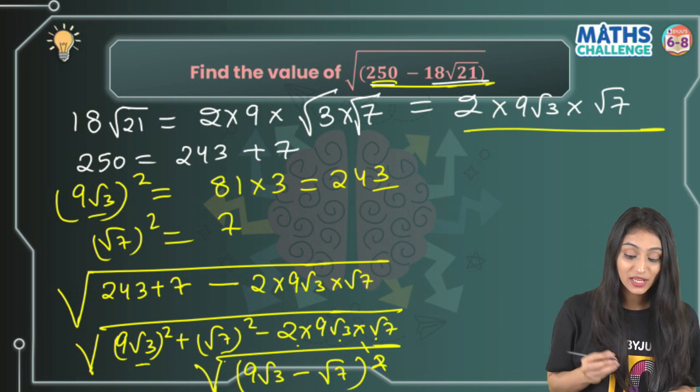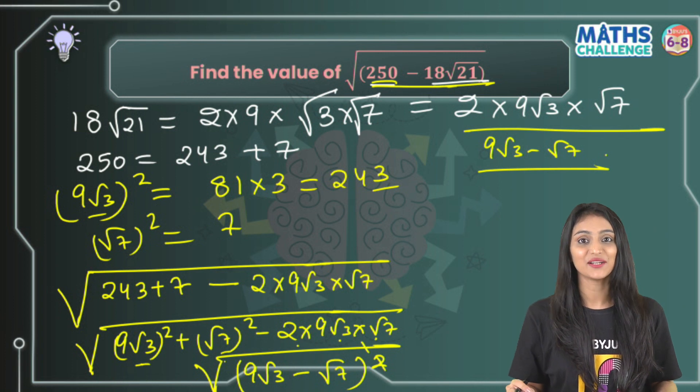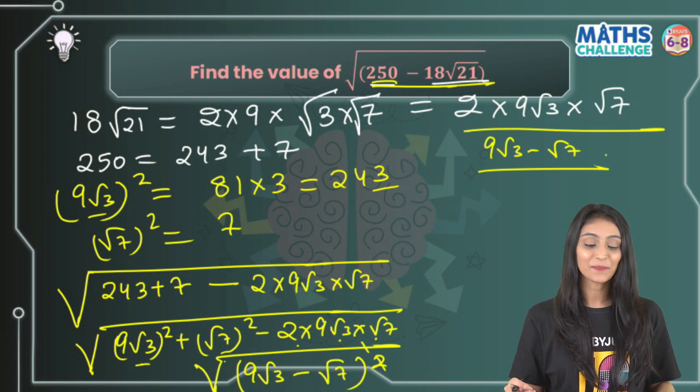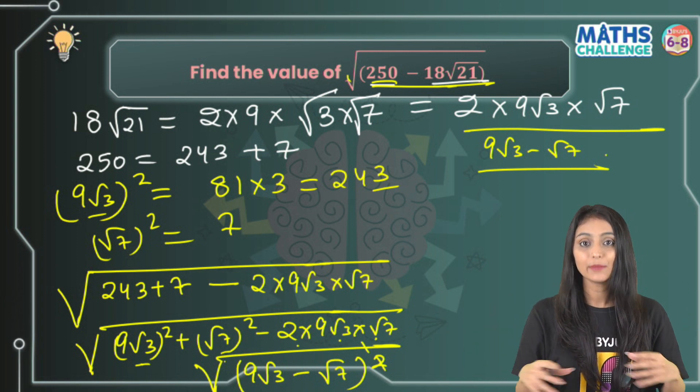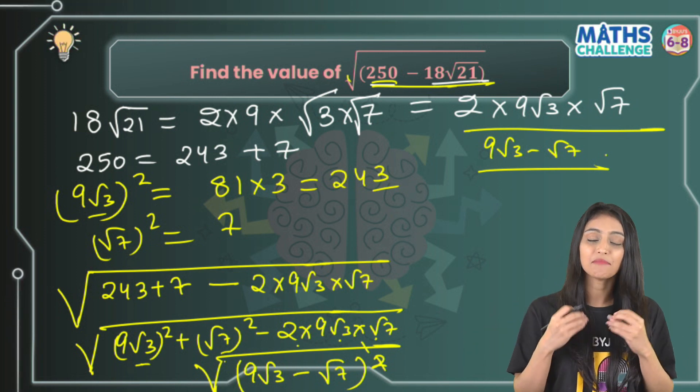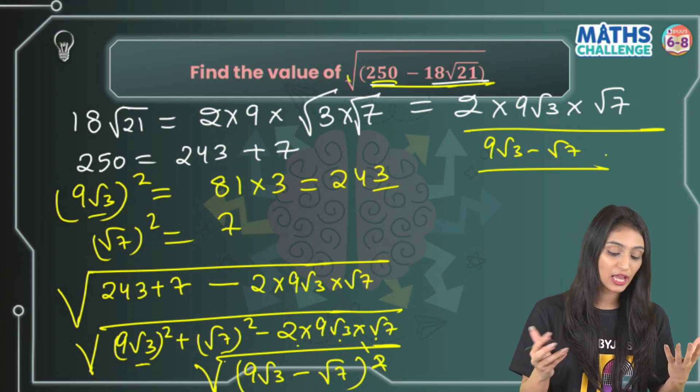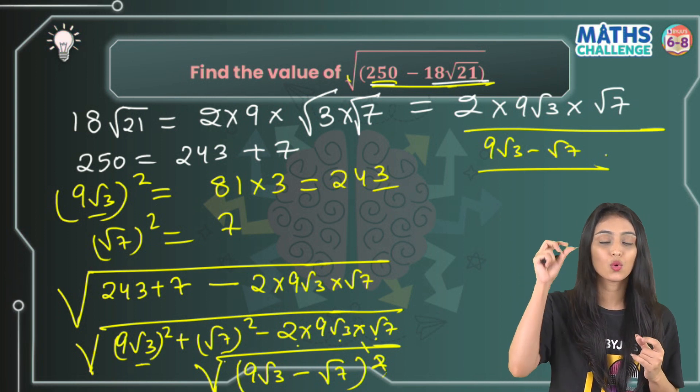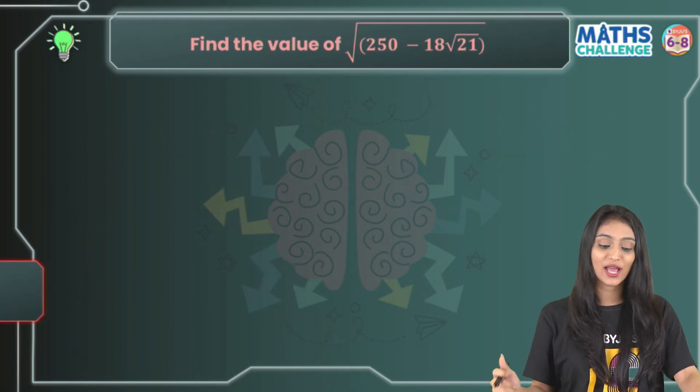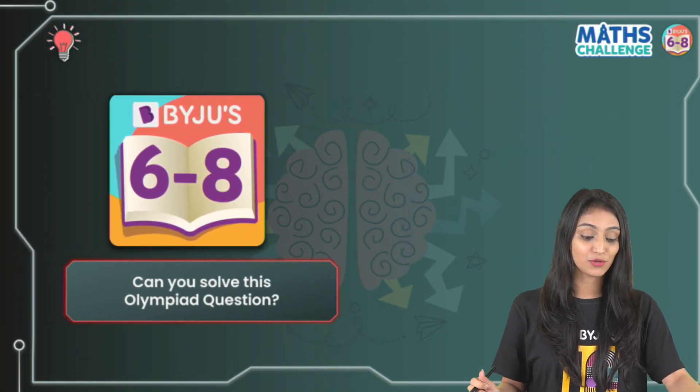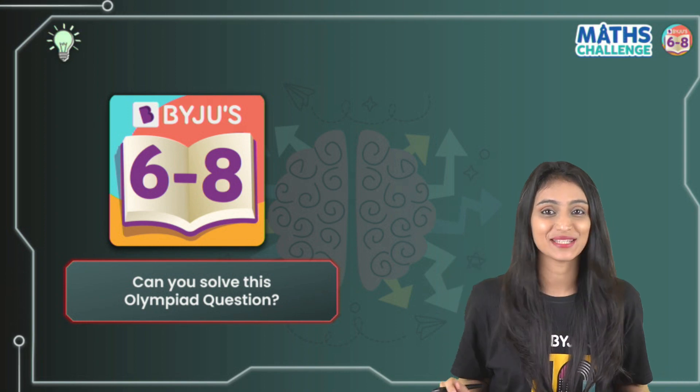Isn't that interesting? Whenever there is a root on the entire expression, on the whole thing, it becomes difficult to simplify. In such cases, most of the time what we have to do is simplify it in such a way so that at the end you get an identity where there is a square at the top of it, so that root and square get cancelled out. Generally this is what happens. You can also try out questions like this, and if you have any doubts you can always ask in the comment section below.